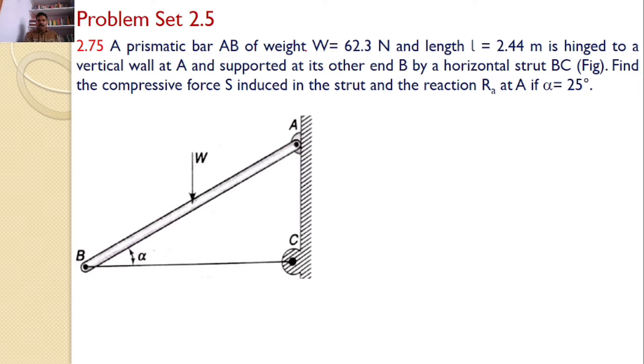A prismatic bar AB of weight W equals 62.3 Newtons and length L equals 2.44 meters is hinged to a vertical wall at A and supported at its other end B by a horizontal strut BC. Find the compressive force S induced in the strut and the reaction RA at A if alpha equals 25 degrees.